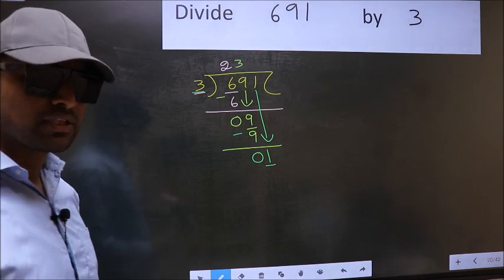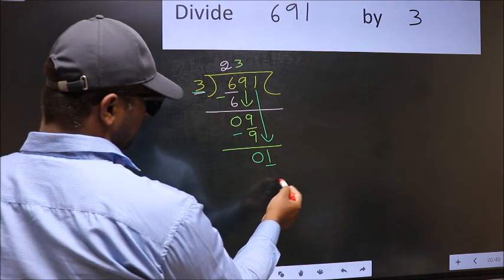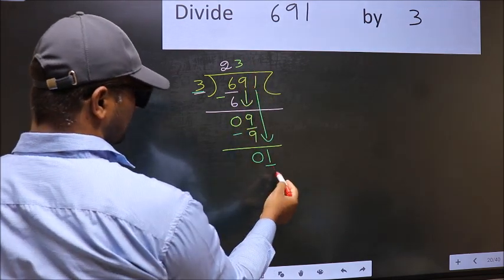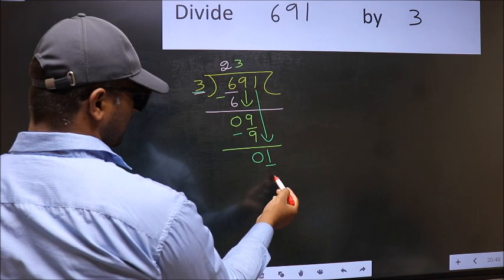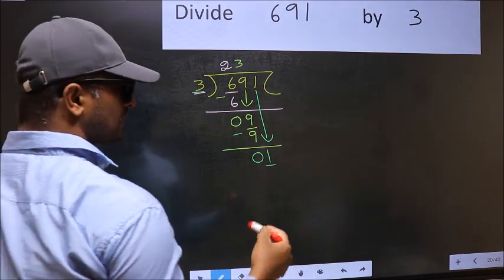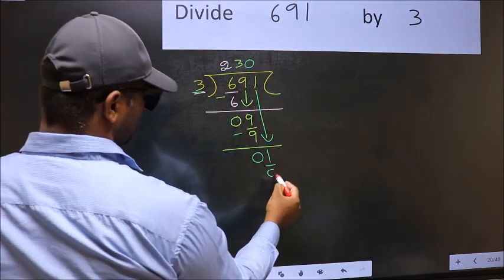Instead, what you should think of doing is, what number should we write here? If I take 1 here, I will get 3. But 3 is larger than 1. So what we should do is, we should take 0. So 3 into 0 is 0.